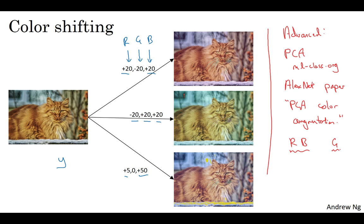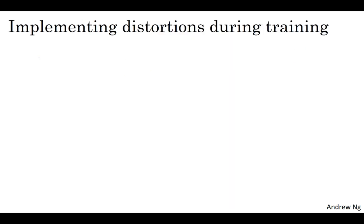If you didn't understand any of this, don't worry about it, but if you want to read about the details of it in the AlexNet paper, you can also find some open source implementations of PCA color augmentation, and just use that. So, you might have your data stored, your training data stored in a hard disk when they use this symbol, this round bucket symbol to represent your hard disk. And if you have a small training set, you could do almost anything, and it would be okay. But if you have a very large training set, then this is how people will often implement it.